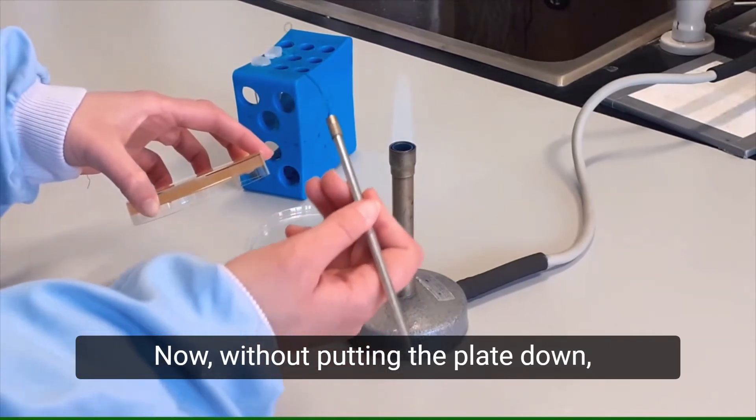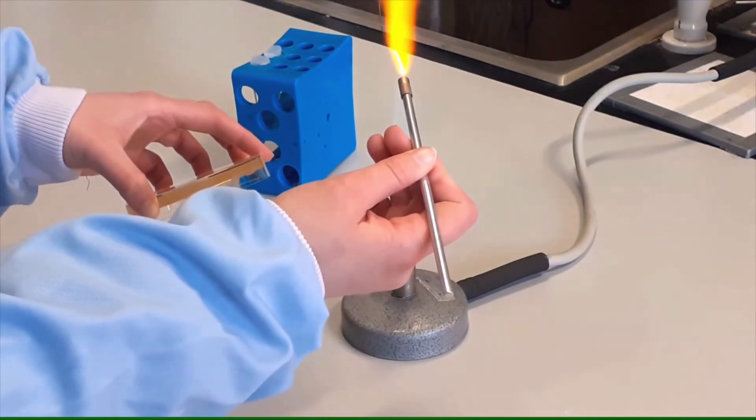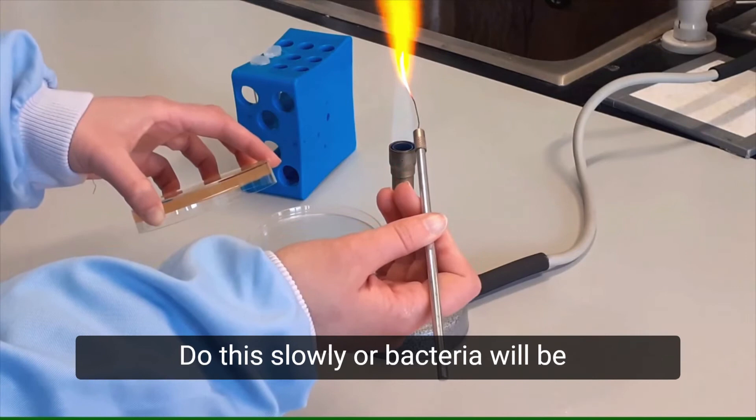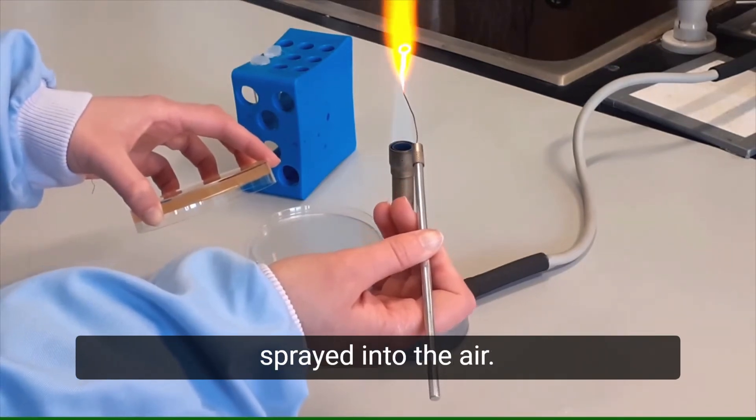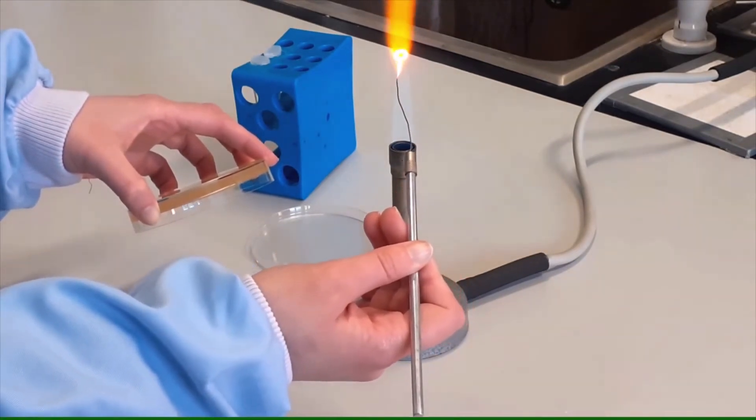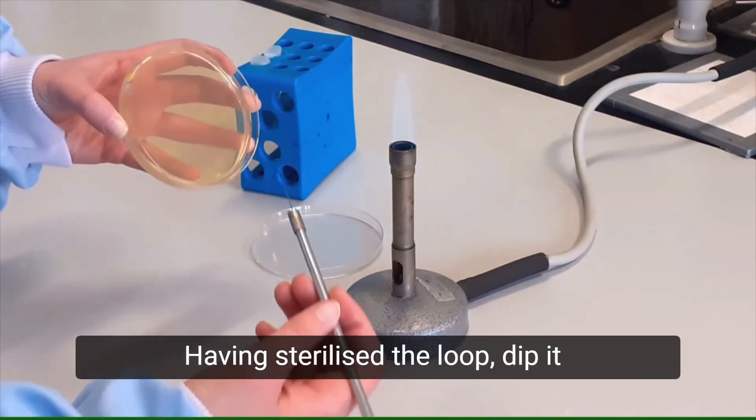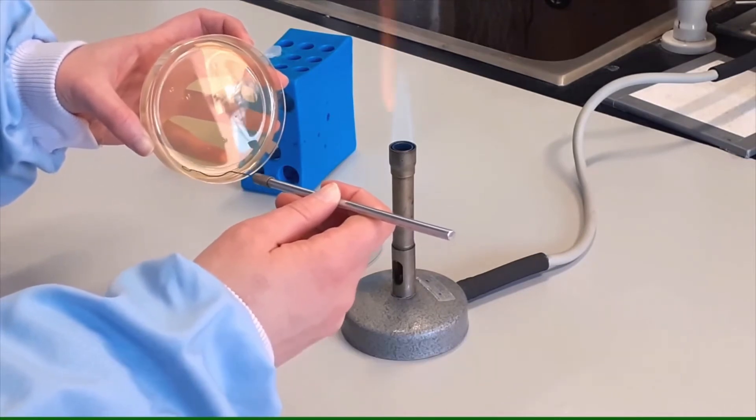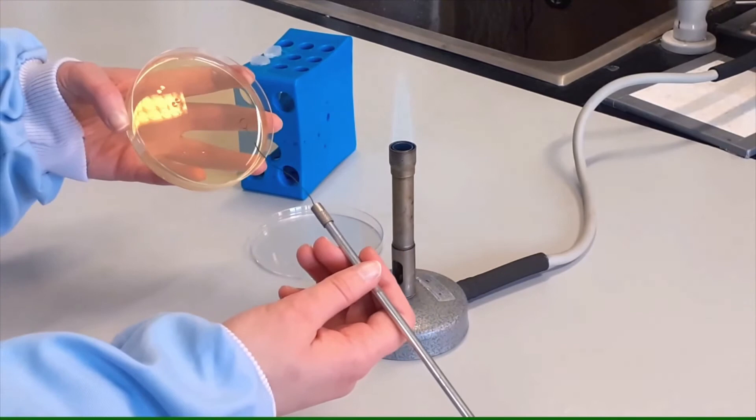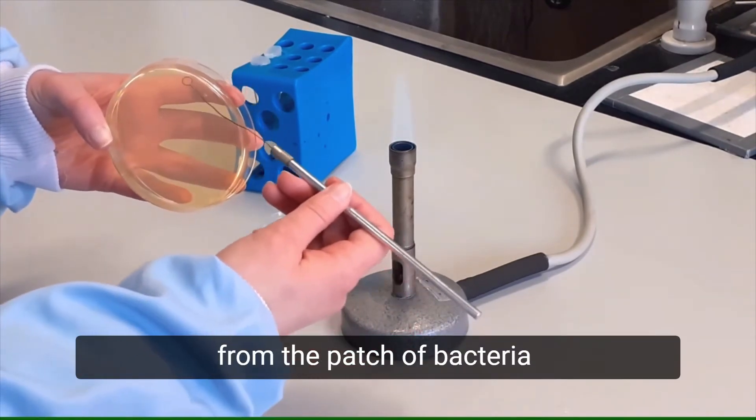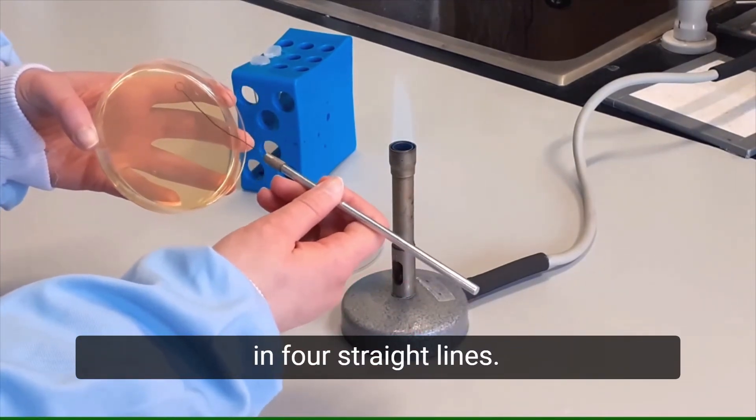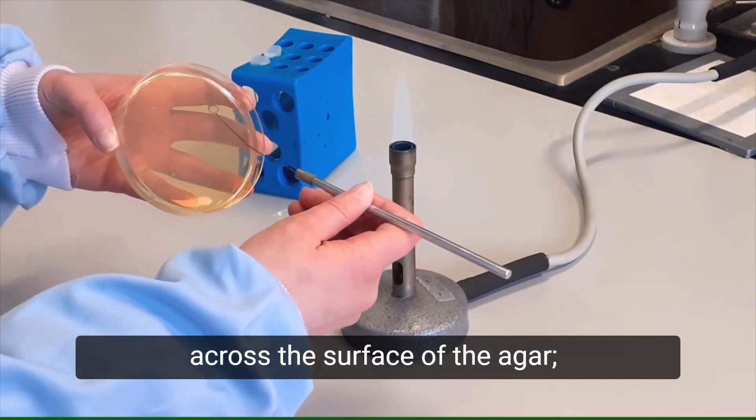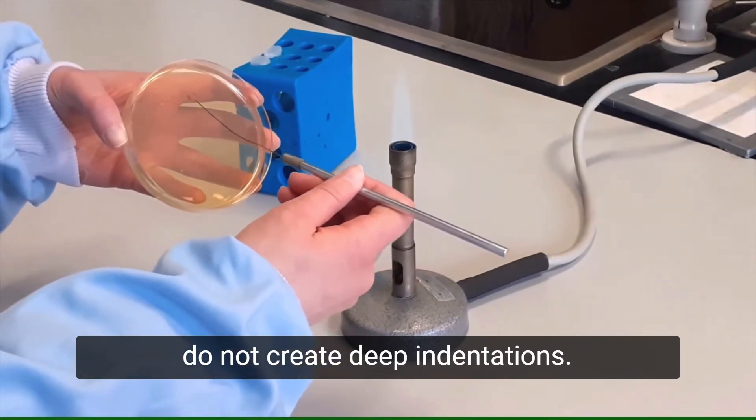Now without putting the plate down, flame the loop again. Do this slowly or bacteria will be sprayed into the air. Having sterilized the loop, dip it into a clean part of the agar plate to allow it to cool. Now streak the loop out from the patch of bacteria in four straight lines. Just drag the loop gently across the surface of the agar. Do not create deep indentations.